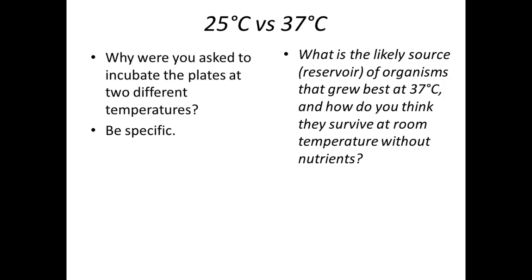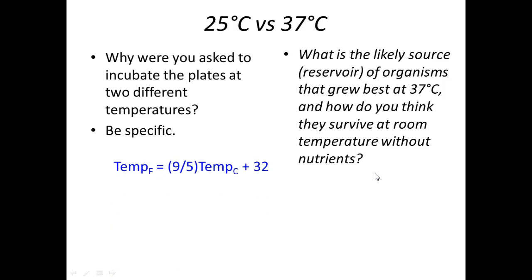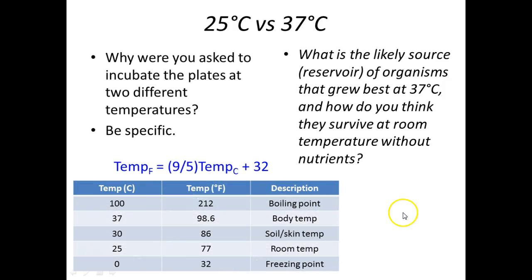We incubate at two different temperatures. What is the likely source for organisms growing at 37 degrees? Human body temperature. And the other one we use is 25 degrees — room temperature.